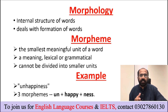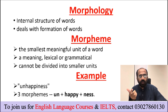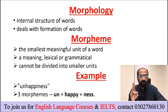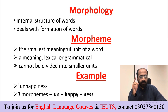For example, take the word 'boys.' 'Boy' is one Morpheme — that is a meaningful, lexical unit. 'S' is another Morpheme — that is a bound Morpheme. So there are two Morphemes: 'boy' representing the object, and 'S' representing plurality.